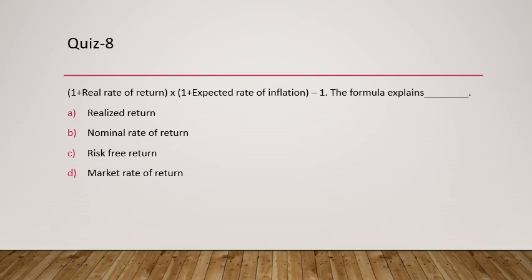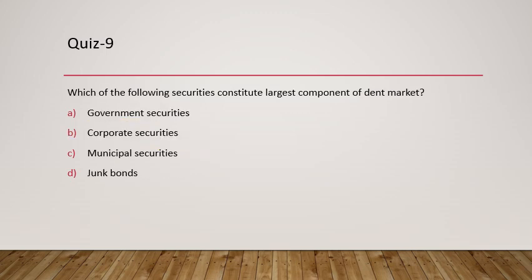Question 8: What does (1 + real rate of return) × (1 + inflation) − 1 give us? Will it give realized return, risk-free return, or market rate of return? No — this formula gives us the nominal rate of return.